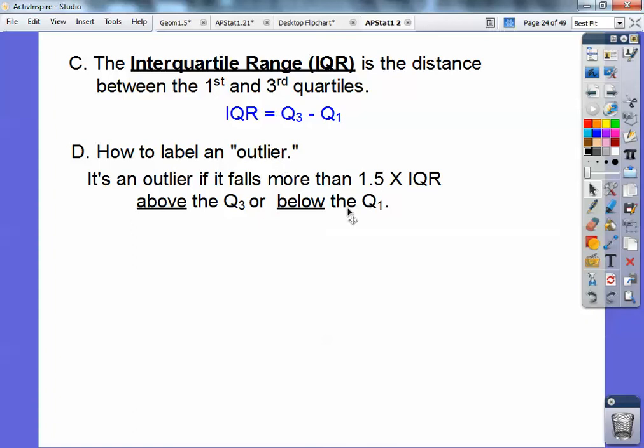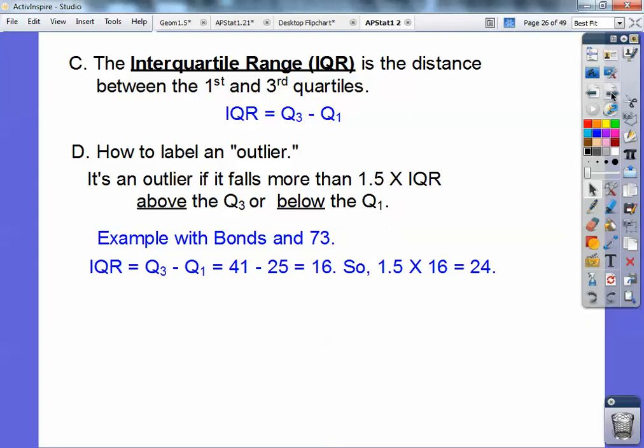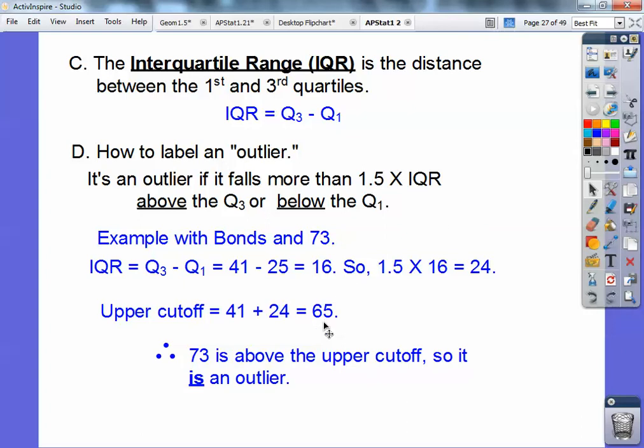So how to label an outlier? It's an outlier if it falls more than 1.5 times the IQR above quartile three or below quartile one. So let's deal with Barry Bonds' 73. His quartile three minus one is 16. So 1.5 times 16 is 24. So I'm going to go quartile three, which is 41. 41 plus 24 tells me the upper cutoff number. The upper cutoff number is 65. So since 73 is above that, then it is considered an outlier. So 73 would be an outlier.